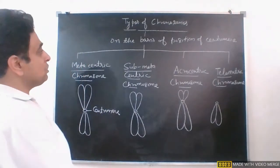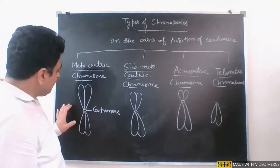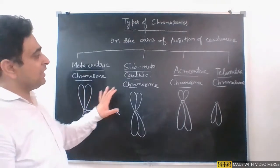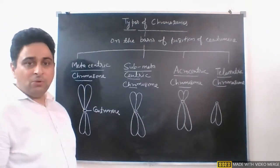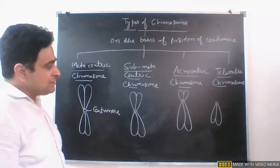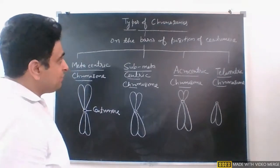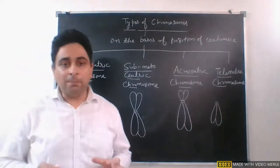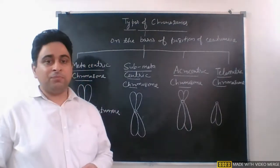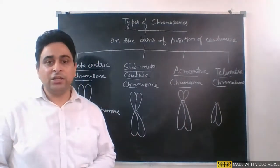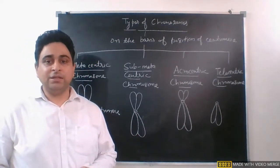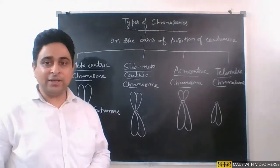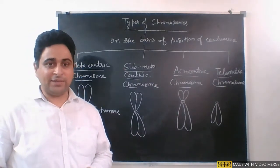So on the basis of the position of the centromere, there are four types of chromosomes: metacentric, sub-metacentric, acrocentric, and telocentric. This completes our discussion of chromosomes and the chapter 'Cell: The Unit of Life.' In the next class we will start a new chapter. Till then, take care. Thanks.